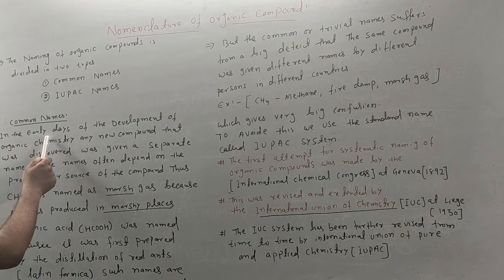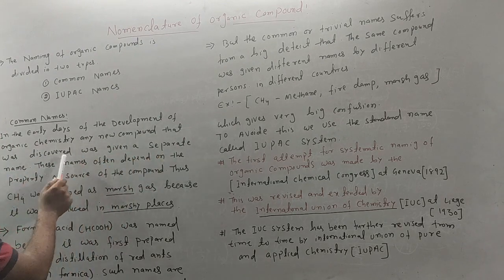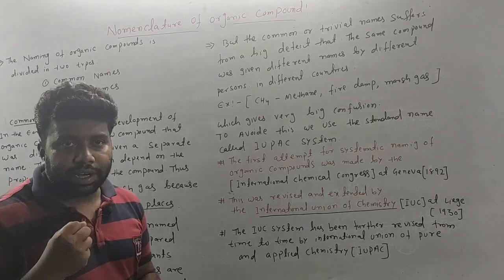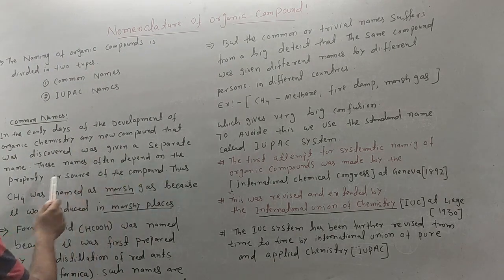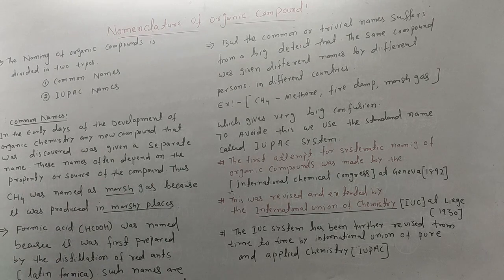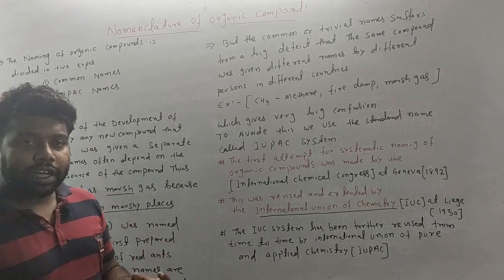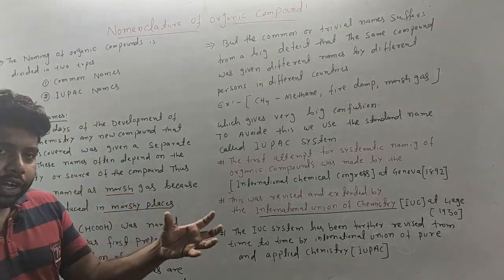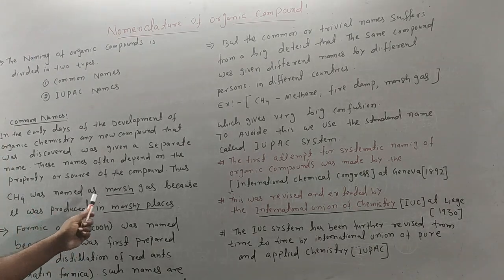In the early days of the development of organic chemistry, any new compound discovered was given a separate name. These names often depended upon the property or source of the compound. For example, CH4 is named marsh gas.